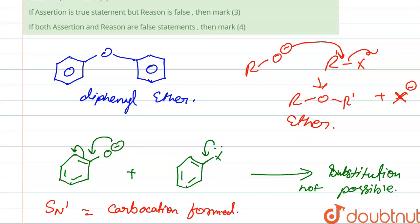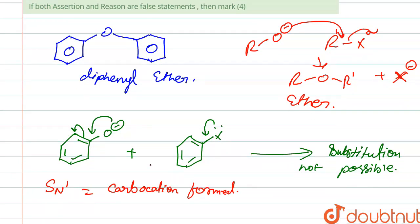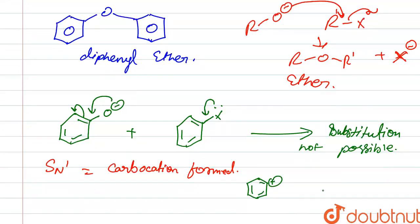And if the, in Williamson reaction, diphenyl ether is possible, if probability is formed, if diphenyl ether is formed, so the carbocation formed like this here. And we know that this is very less stable.